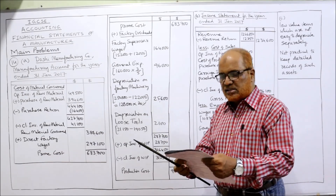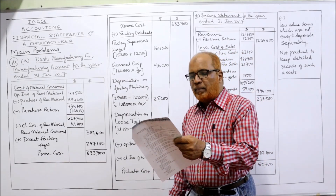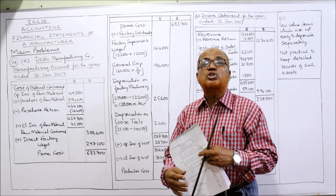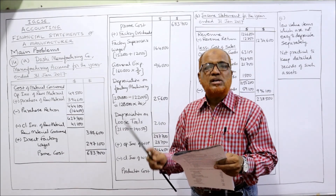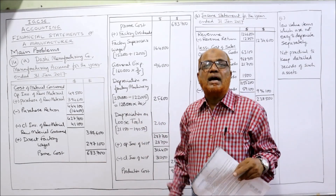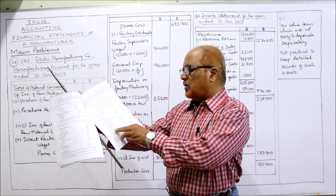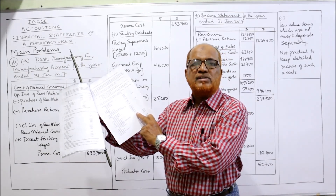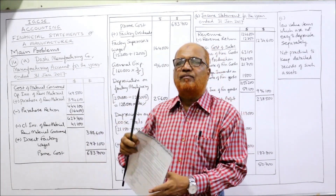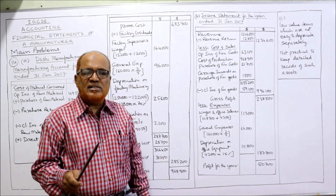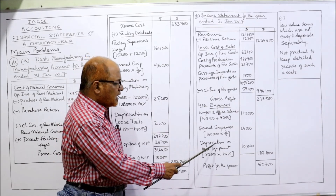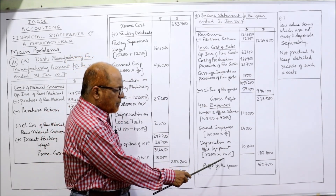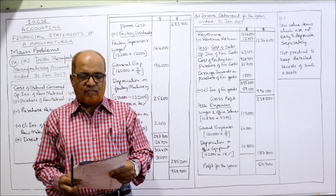Office equipment is being depreciated at 15% per annum on the straight-line method — straight-line method means original cost method. On factory machinery we use reducing balance; on office equipment we use straight-line method. Cost of office equipment from the problem is 72,000. Depreciation on office equipment should be taken in the income statement. So 72,000 into 15 by 100 equals 10,800 — that is the depreciation of office equipment.